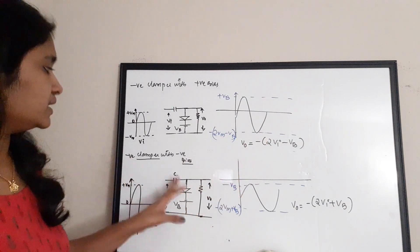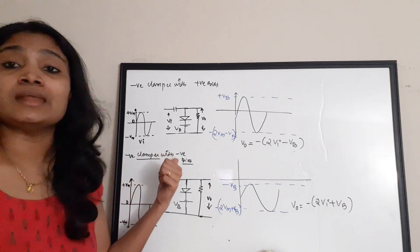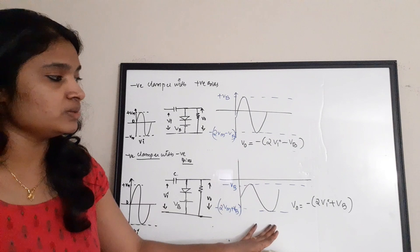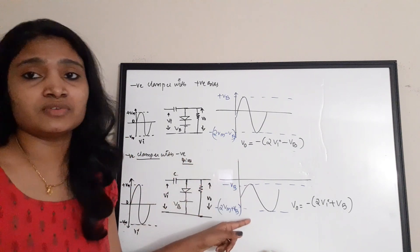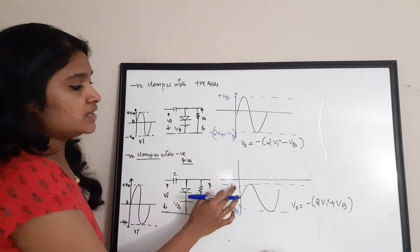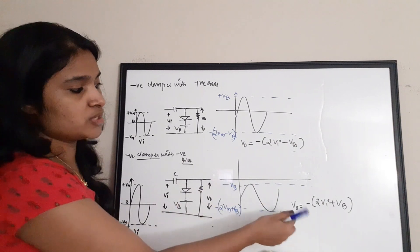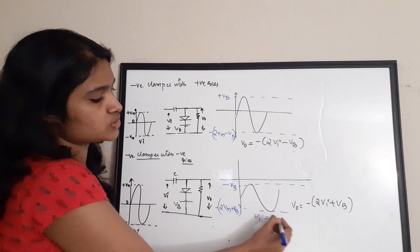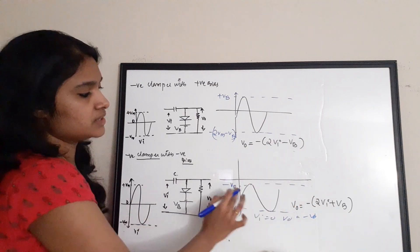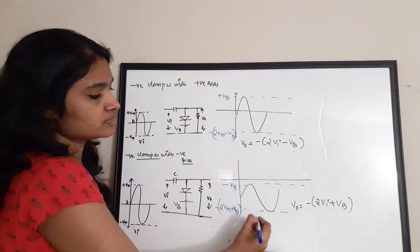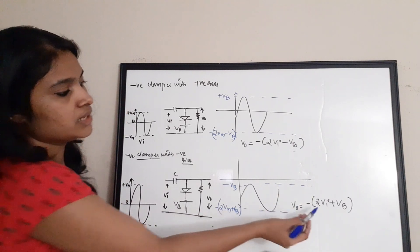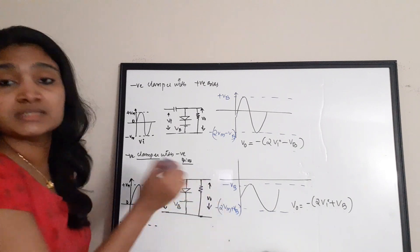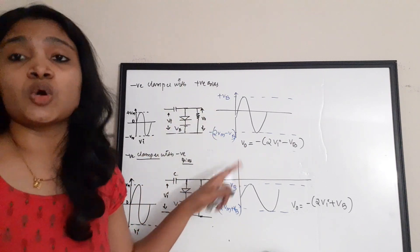For a negative clamper with negative bias, the circuit is the same but Vb is now negative. The waveform is entirely on the negative side since both the clamper and bias are negative. The new level is -Vb and the output equation is Vout = -(2Vi + Vb). When Vi = 0, Vout = -Vb. When Vi = Vm, Vout = -(2Vm + Vb). Note these graphs, levels, and output equations carefully.